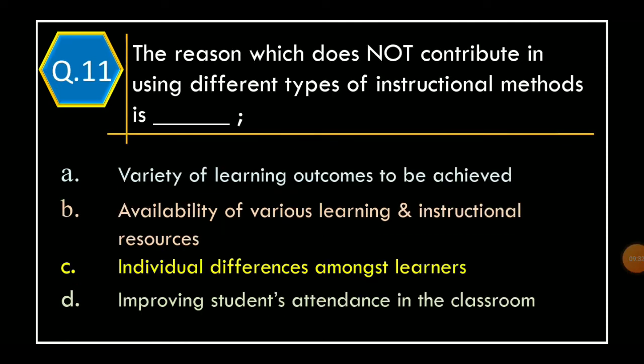Question 11. The reason which does not contribute in using different types of learning methods is: Option A – Variety of learning outcomes to be achieved. Option B – Availability of various learning and instructional resources. Option C – Individual differences amongst learners. Option D – Improving students' attendance in the classroom.